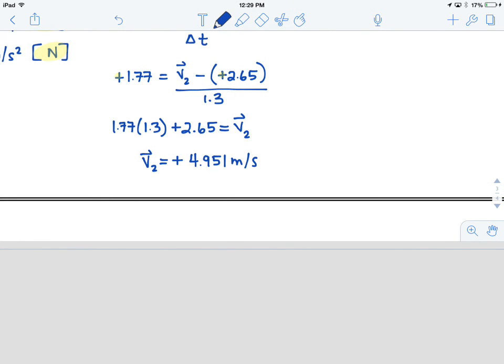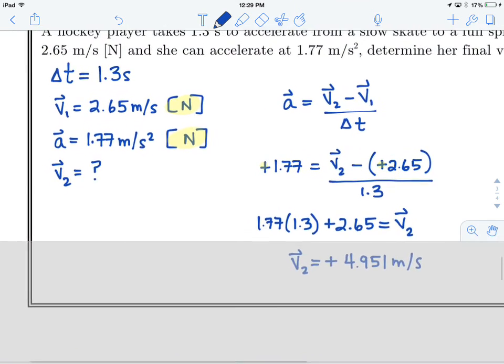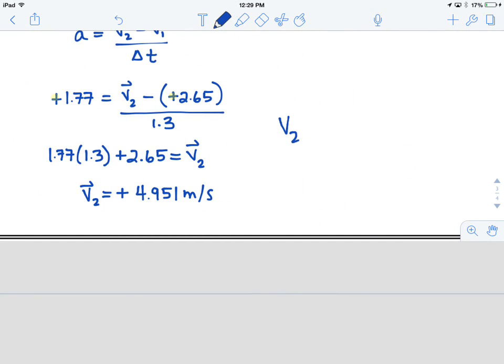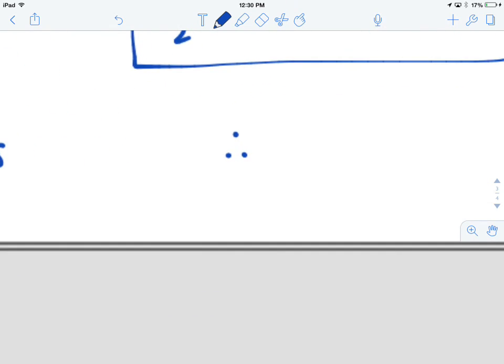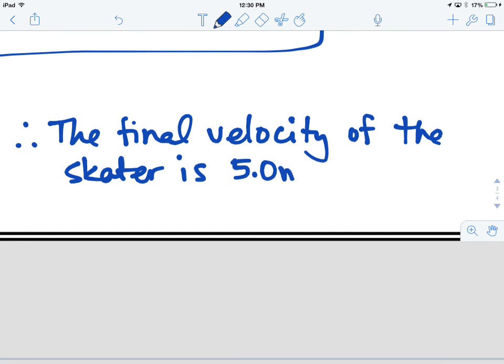And so we can summarize, again, looking at sig figs. We've got three sig figs, three sig figs in one, and, sorry, excuse me, two sig figs in the time, right? So this is our limiting measurement. And so what we'll say, then, is finally that v2 is equal to 5.0 meters per second north. Put this in a box, because it's our final answer. And then a therefore statement. The final velocity of the skater is 5.0 meters per second north. And there you have it.